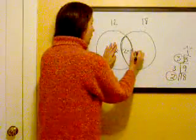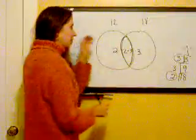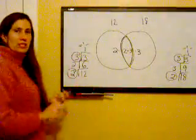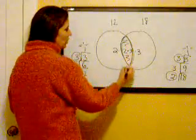Over in the 18 circle, 2 times 3, the one thing I haven't done is multiply by 3. So 2 times 3 is 6 times 3, 18. From this diagram, we can see that what they have in common, this area here, is 2 times 3.